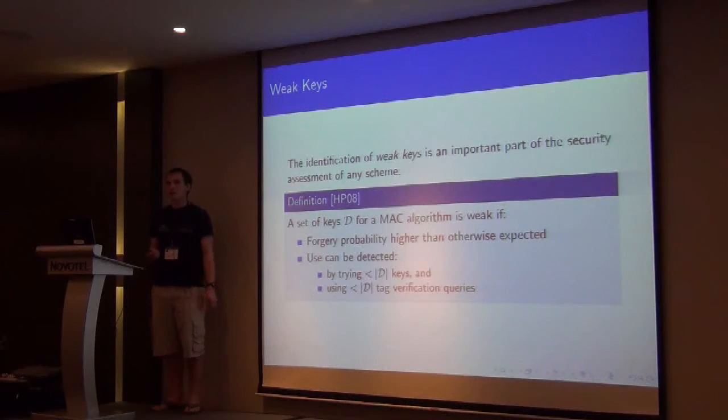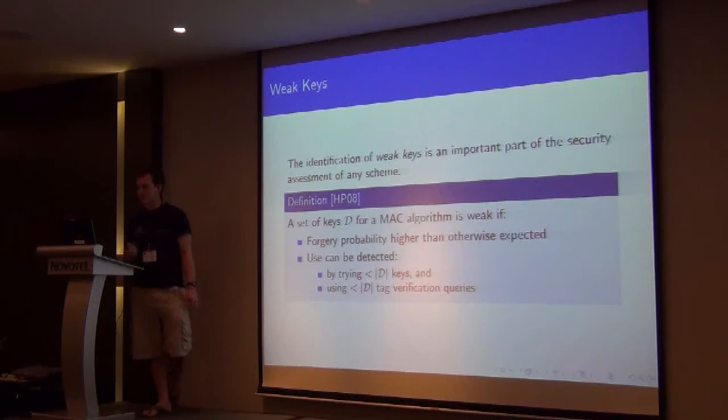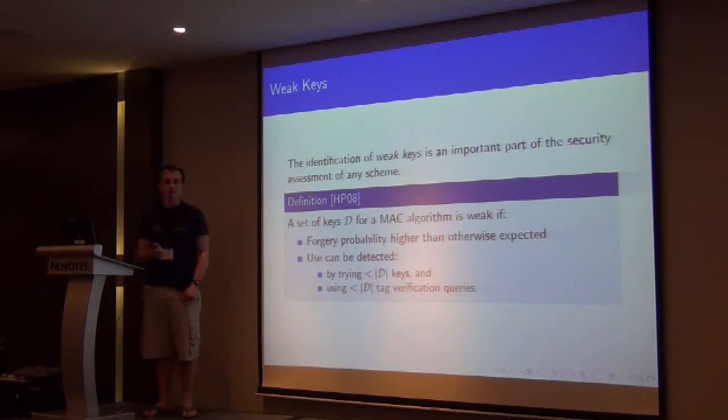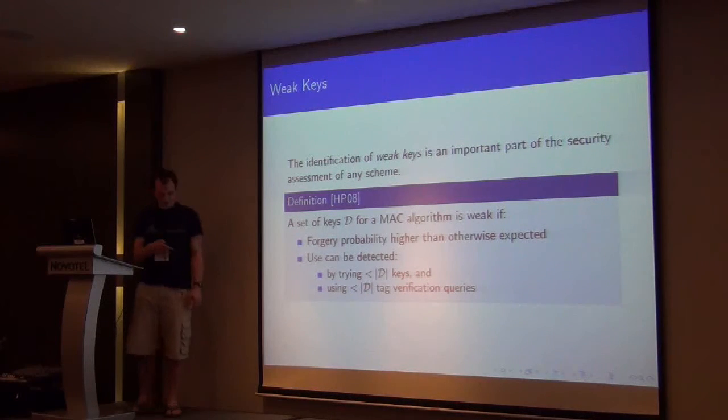Quick down to the weak keys. There's been a few papers today that have talked about weak keys. The definition we're taking is from Andrew and Priel in 2008. And they say that a set of keys is a weak key class if something unexpected happens. So in this case, we're going to say that we want the forgery probability to be higher than you would otherwise expect it to be.